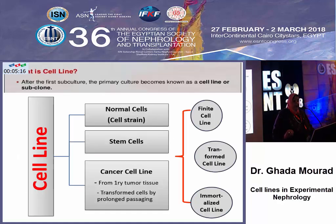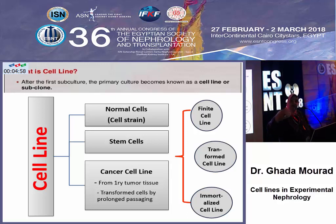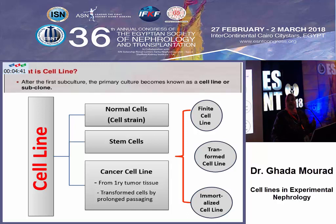The alternative is the establishment of cell lines to provide a material upon which we can conduct research — a culture that goes through several propagations and passages and can proliferate indefinitely. These cell lines could be either normal cells, stem cells, or cancer stem cells. Each of these could be brought into cell line status by either being left as they are, resulting in a finite cell line with a short lifespan, or made into a continuous cell line through immortalization.